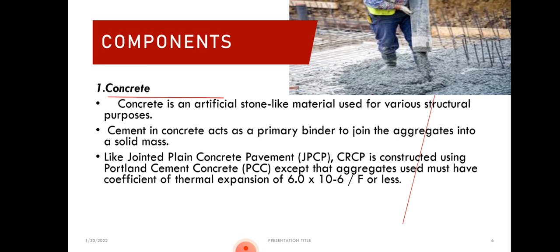The first component of CRCP is concrete. Concrete is an artificial stone-like material used for various structural purposes. It is made by mixing cement, sand, and various aggregates such as gravel with water, and allowing the mixture to harden by hydration. Cement in the concrete acts as the primary binding agent to join the aggregates into a solid mass. Like jointed plain concrete pavement, CRCP is constructed using Pozzolana cement concrete (PCC), except that the aggregates used must have a coefficient of thermal expansion of 6.0 × 10⁻⁶ per °F or less.